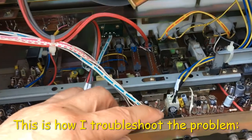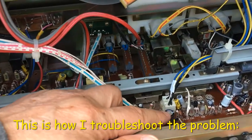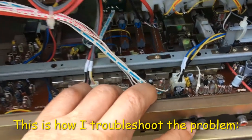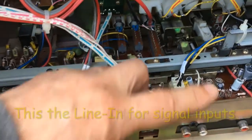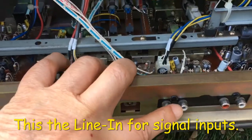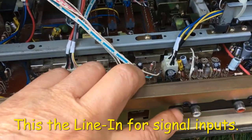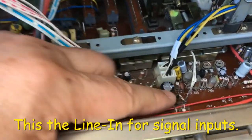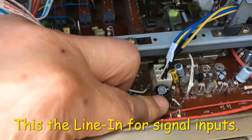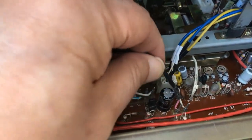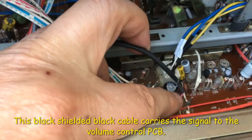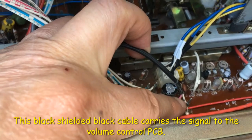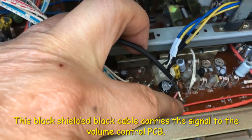I'm going to explain how I'm going to do the troubleshooting. This is the line in jack here. And inside here you can see the cable right here. It has three wires: ground wire and also white and pink wire. The white one is the left channel.